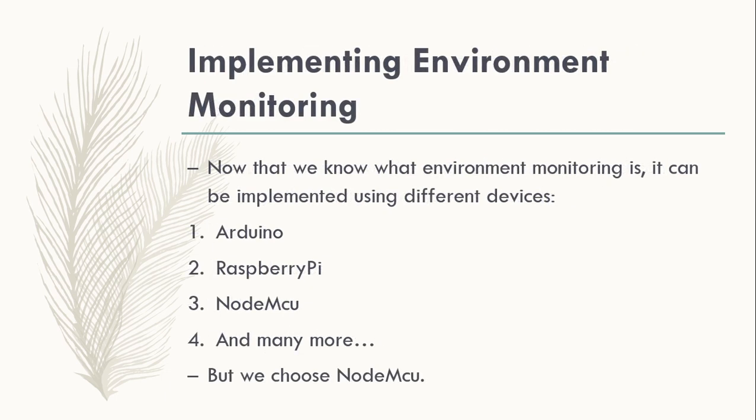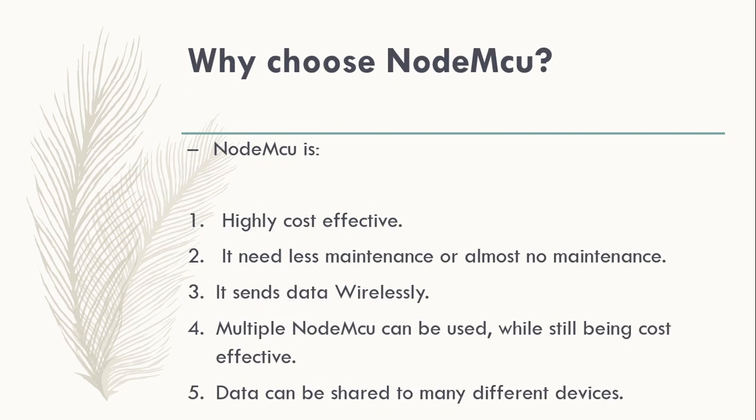How do we implement environment monitoring? We can do it using different IoT devices — embedded devices such as Arduino, Raspberry Pi, and NodeMCU. In our project, we are using NodeMCU. A quick introduction: why NodeMCU? It's cost effective, cheaper than other devices, has very low maintenance because of its size and power requirements, and it sends data wirelessly, giving us great flexibility.